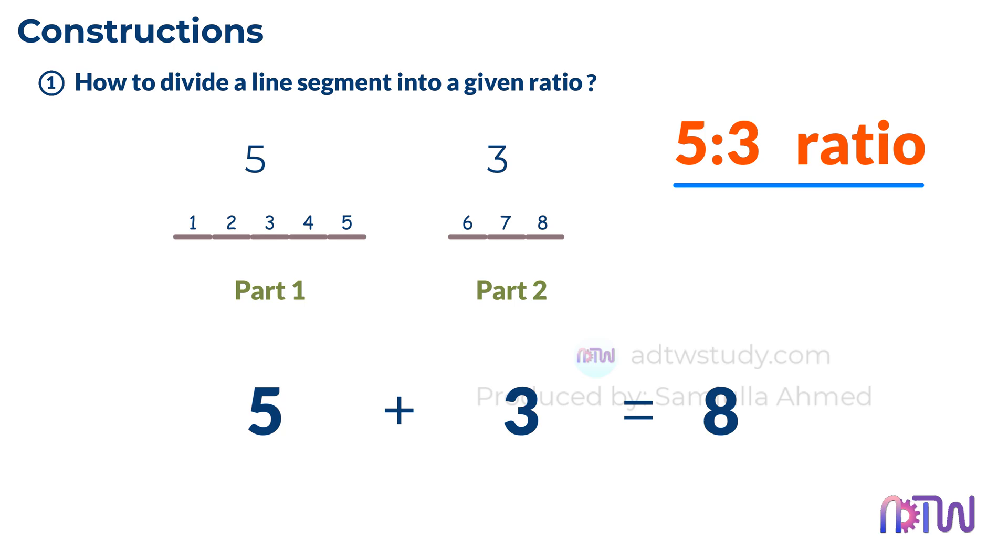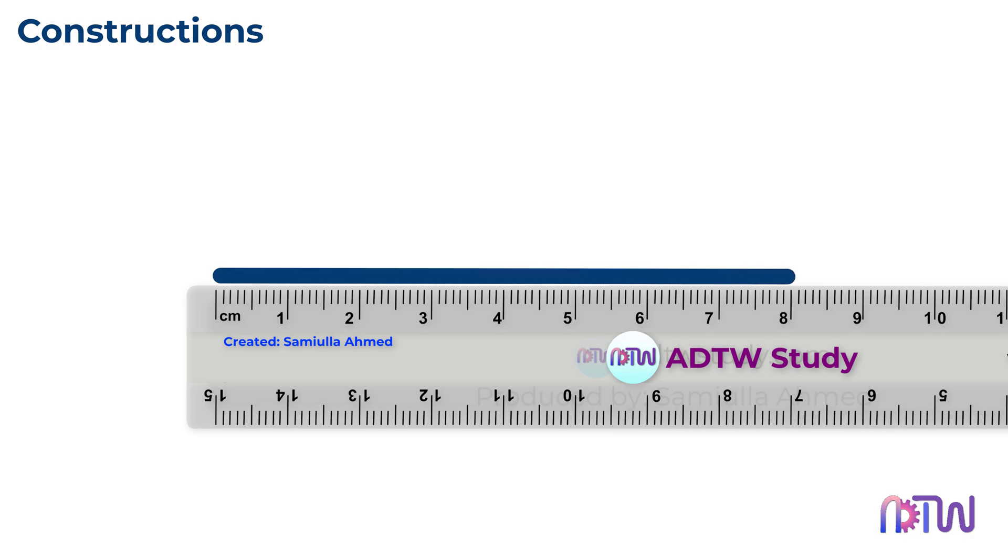Once we understand what dividing a line into a ratio means, let's see how we can actually do it. Suppose you want to divide an 8 centimeters long line into a ratio of 5 to 3. In this case, you could simply mark points at one centimeter apart and divide the line at the fifth point. But what if the line is a bit longer than 8 centimeters, or you don't know the exact length of the line, or don't have a scale that measures the length precisely? To make this easier, we have a simple construction method that allows you to divide any line into any ratio without even knowing its exact length.